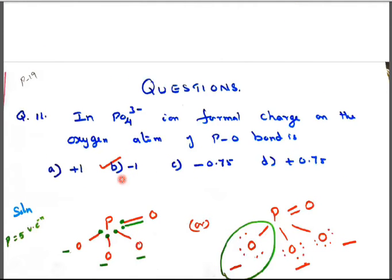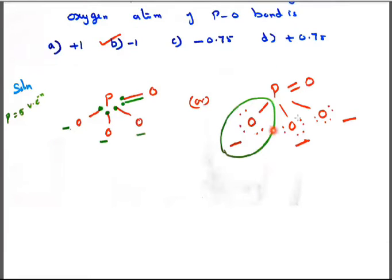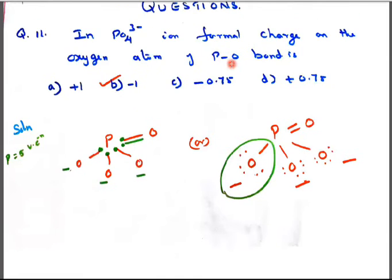Minus 1 is the formal charge of the oxygen P-O bond. If it is P double bond O, different answer there. As only P single bond O bond, we can choose any one single bond, same answer only we will get it.